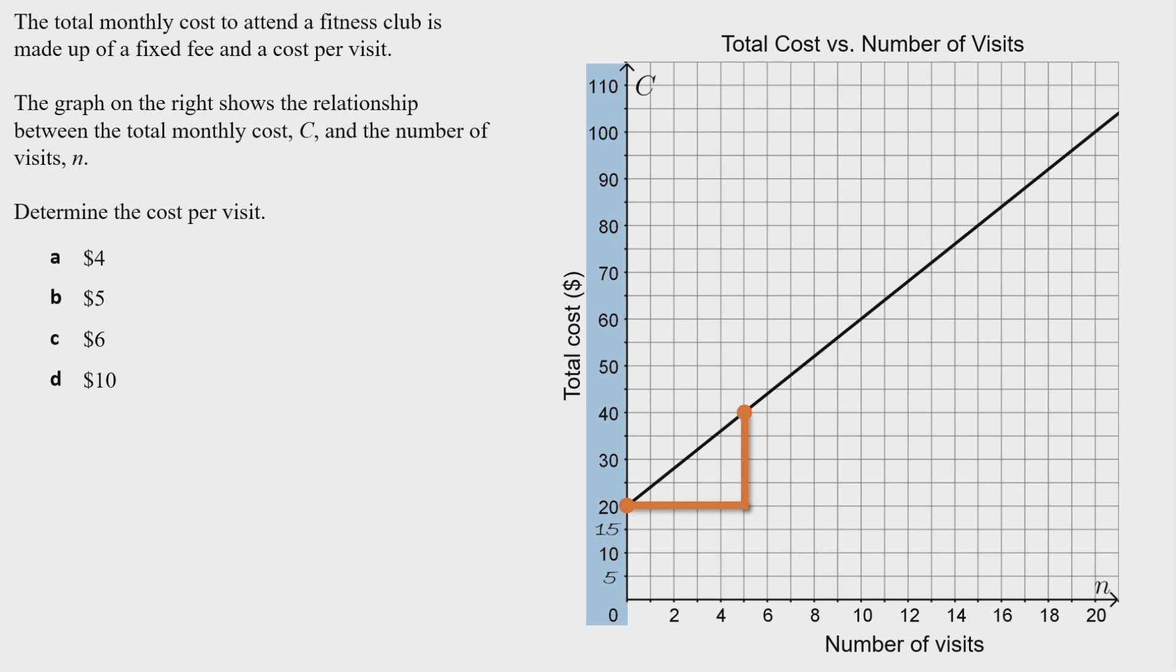Moving up the vertical axis, each square is another 5. On our line, we have one, two, three, four squares. Each square is 5, so counting by 5: 5, 10, 15, 20. We went up 20.